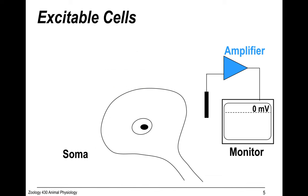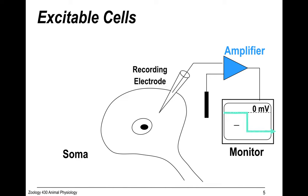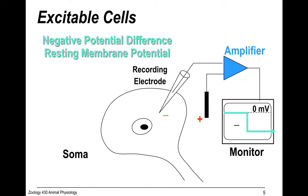So how do these things work? They're called excitable cells because there's a lot of electrical activity within them. If you put a recording electrode inside the cell and measure the difference with the extracellular environment, you see a negative potential — the inside of a neural cell is more negative than the outside. This is called the resting membrane potential.